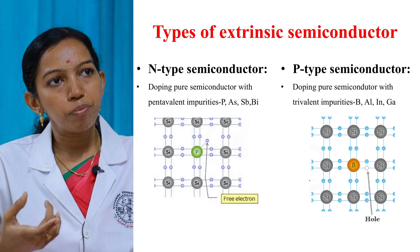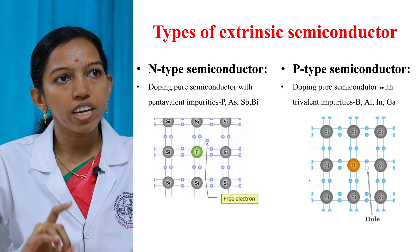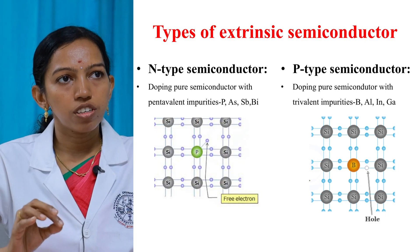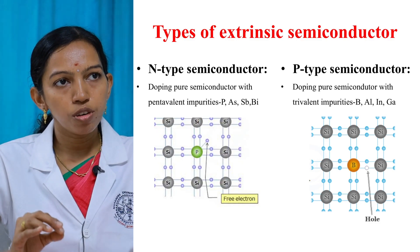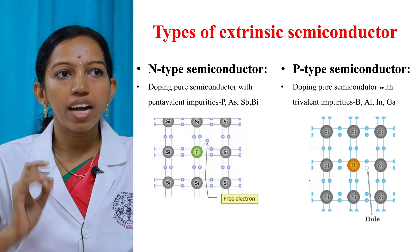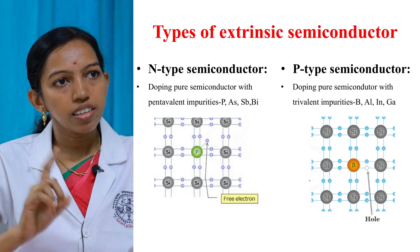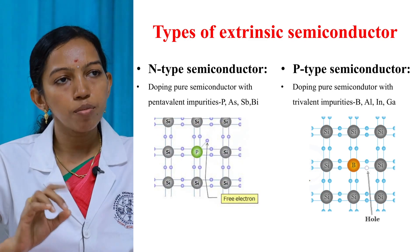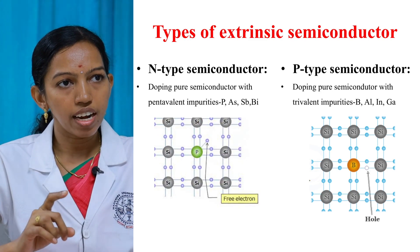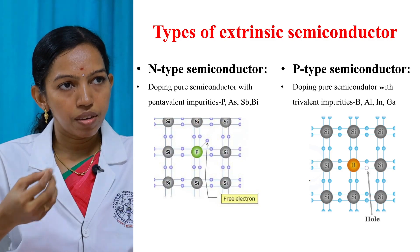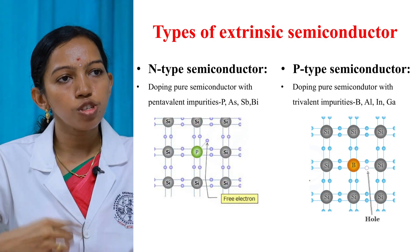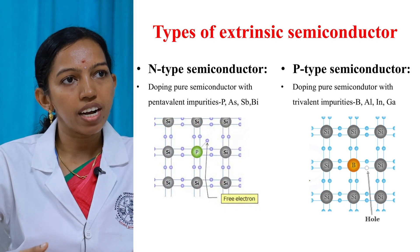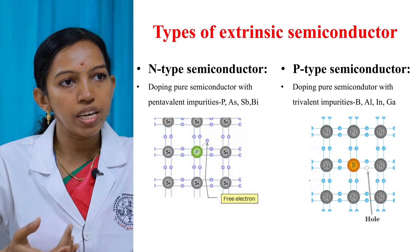The P-type semiconductor is obtained by doping the pure semiconductor with trivalent impurities. Examples of trivalent impurities are boron, aluminium, indium, and gallium. In the silicon crystal structure, the silicon atom is replaced by a trivalent impurity, that is the boron atom. The boron atom causes the release of an extra hole. In P-type semiconductor, the majority charge carriers are holes.